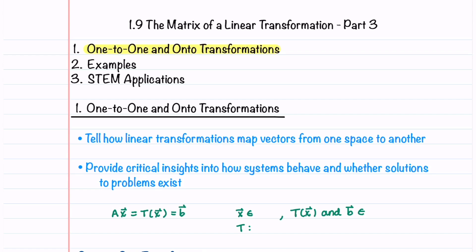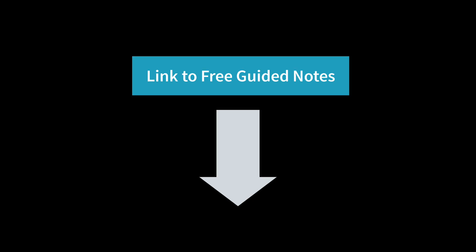I'll go over diagrams that will help you understand these transformations and then walk through example problems where I'll teach you the steps that you need to follow to determine if a linear transformation is one-to-one and or onto. Be sure to check out the link below for free guided notes that you can highlight and fill in as you watch this video.